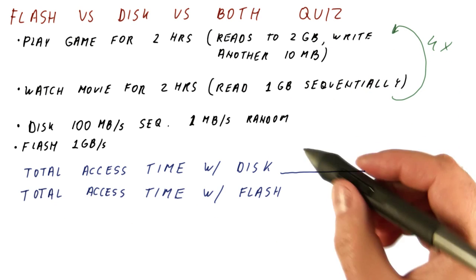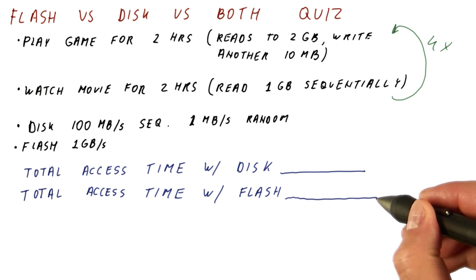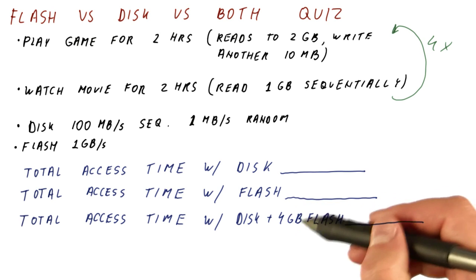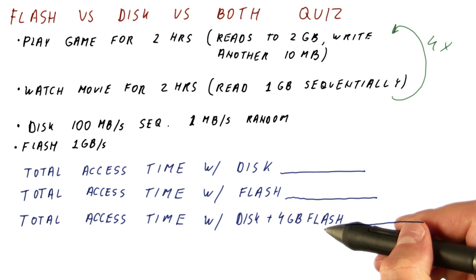What is the total access time if we use pure flash? And what is the total access time if we have a disk and a four gigabyte flash cache that is initially empty?